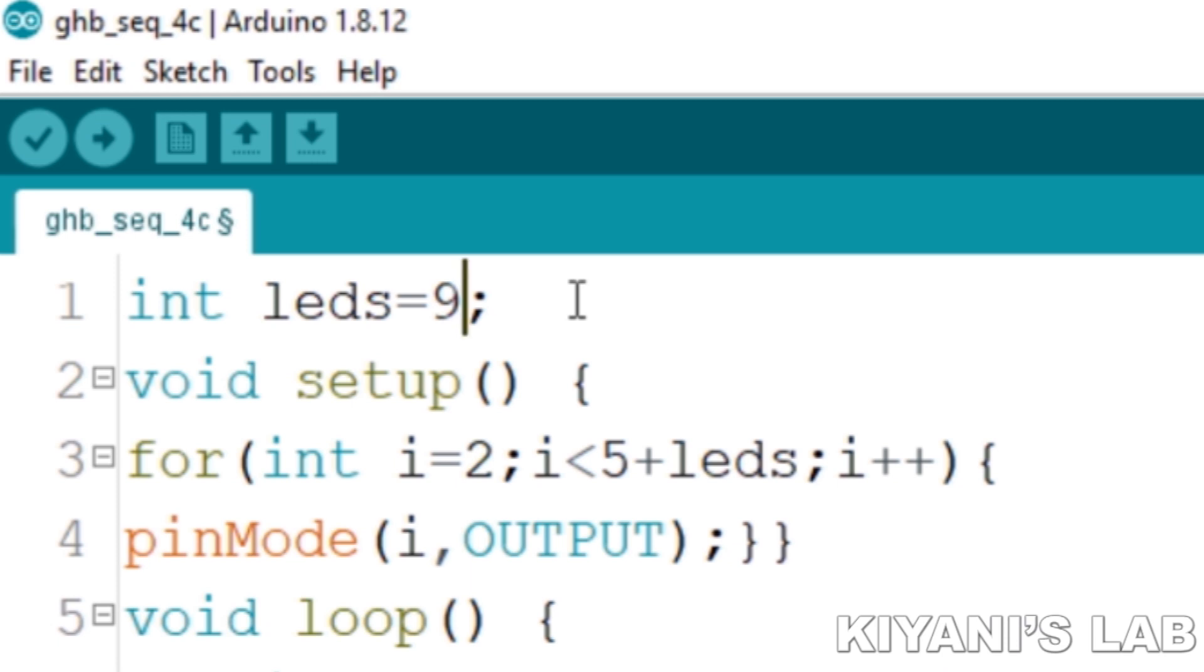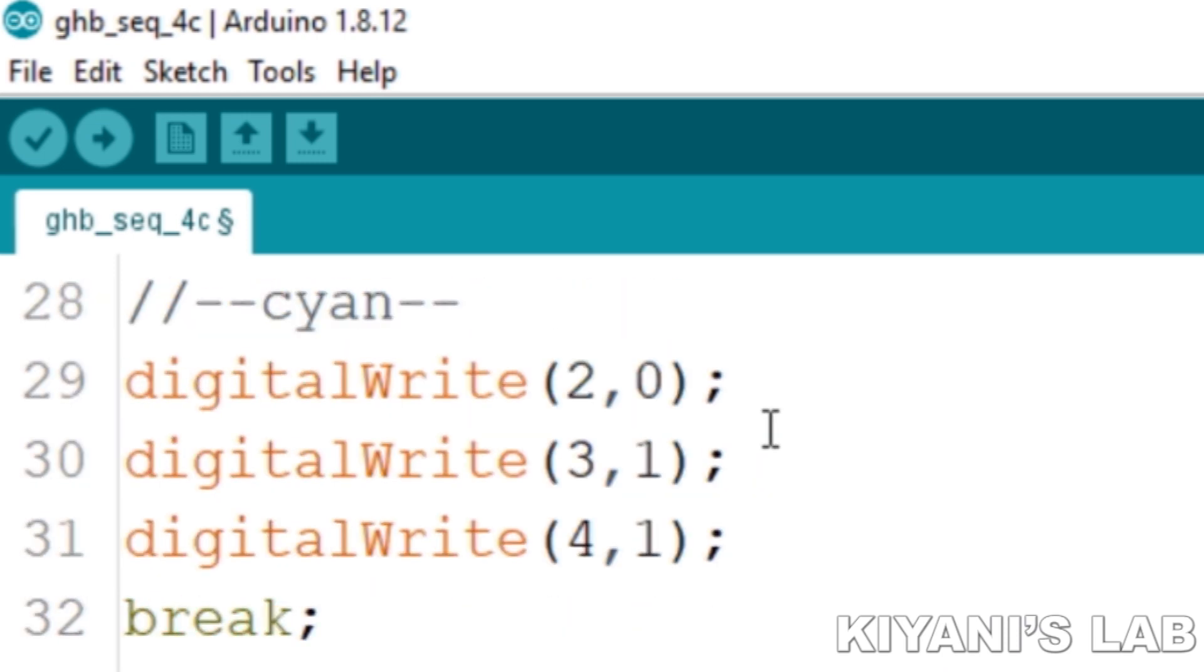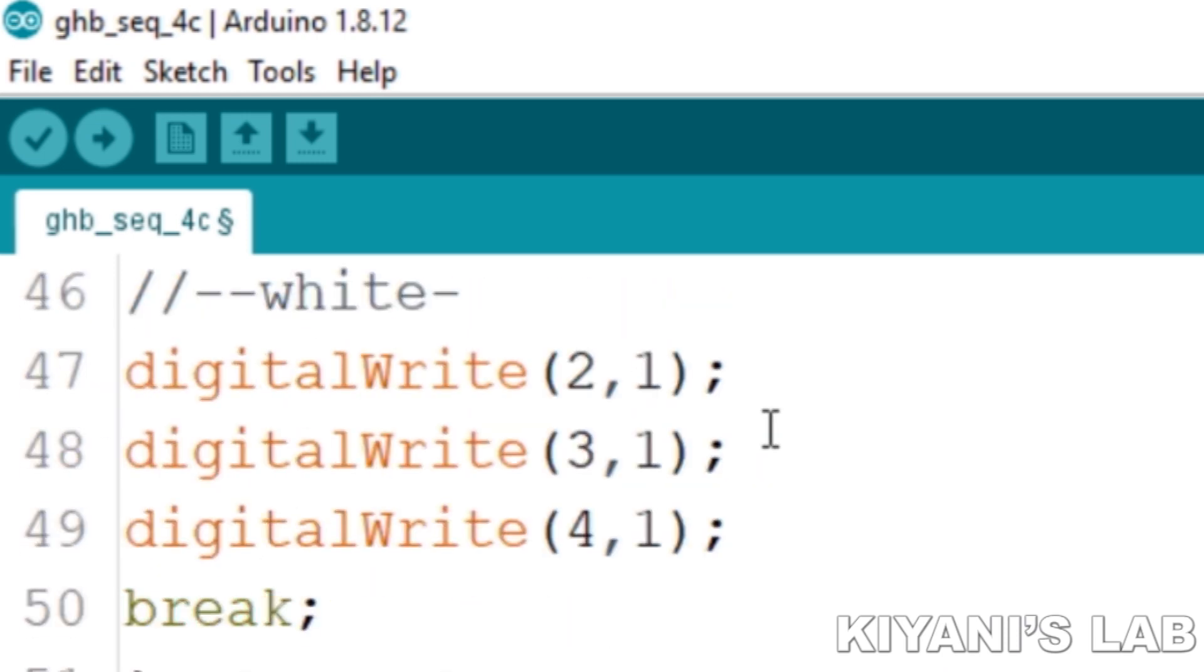The rest of the code is just turning on and off LEDs in a sequence. This circuit can make up to 7 colors by turning on and off RGB LEDs.